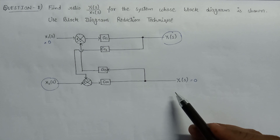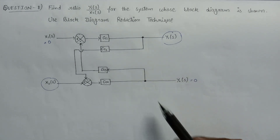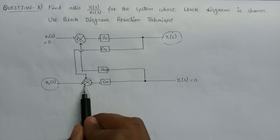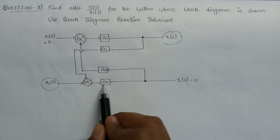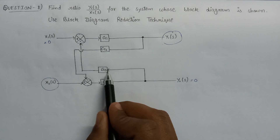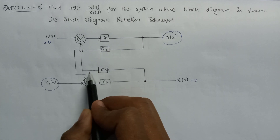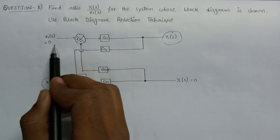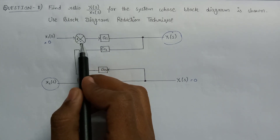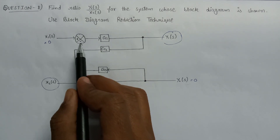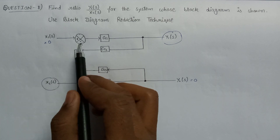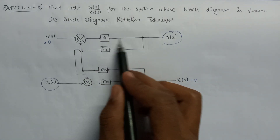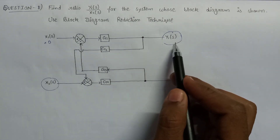Using block diagram reduction technique, we simplify this block diagram. At this branch, the input X2(s) is applied to the summer. The output of the summer is applied to G4, which is directly connected with G3 in series. G3 is then fed to the next summer, but since that input is zero, there is no need for that summer. We can directly connect G3 with G1, and G1 is fed to the output Y1(s).